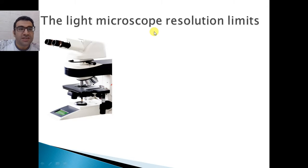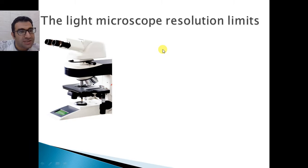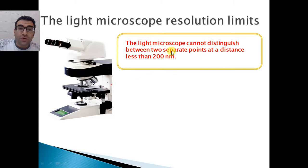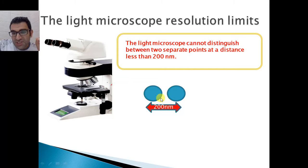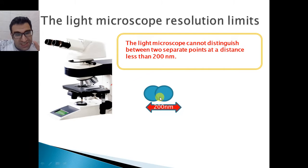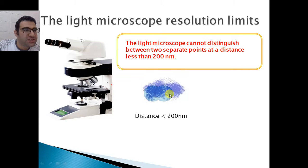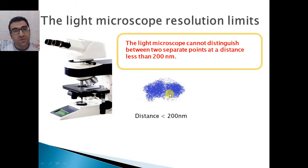The light microscope has resolution limits — it cannot distinguish between two close objects inside the cell. The light microscope cannot distinguish between two separate points at a distance less than 200 nanometers. So any two microscopic points separated by 200 nanometers can still be seen as two separate objects under the light microscope. However, if those points are closer than 200 nanometers, you will see a blurry or fuzzy picture. This is the major limitation of the light microscope.